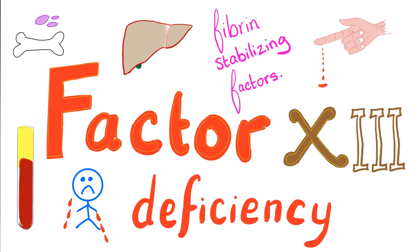In the previous video we talked about Factor 12 deficiency, which was weird because the PTT was so prolonged yet the patient was asymptomatic. But Factor 13 is kind of the opposite — the patient is not asymptomatic; in fact the patient is suffering from severe bleeding. However, the PTT is absolutely normal because Factor 13 is not in the intrinsic pathway. Like most rare inherited coagulation disorders, Factor 13 deficiency is autosomal recessive.